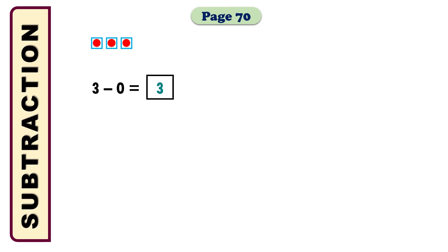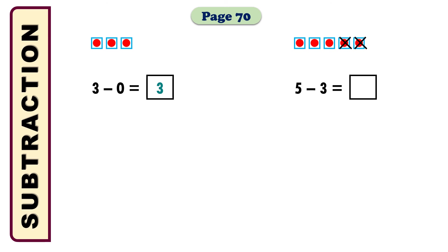In the next math we have 5 minus 3 equals what? As you can see, we need to take 5 boxes. Among the 5 boxes I have to cross 3: 1, 2, 3. So how many remain? There are 2 boxes free — sorry, 2 boxes are free. So the answer will be 2. I have taken 5 boxes, crossed 3 among them, and counted that only 2 boxes remain — so the answer is 2.